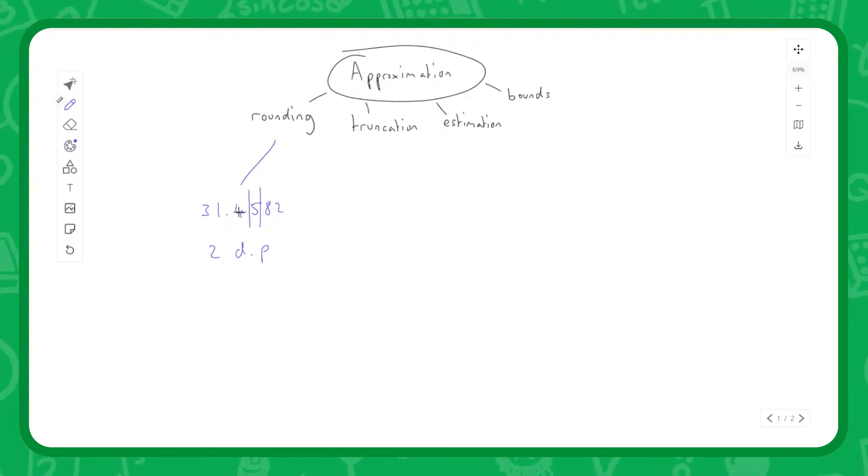All we do is look at the number directly next to what will end up being my final column, and because that's an 8, well it's 5 or above, we therefore round up and end up with 31.46. If the 8 was say a 3, then it would be less than 5 and therefore we would round down and that 5 in my final column would stay as a 5 rather than change into a 6.